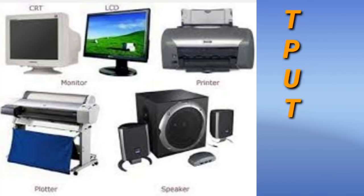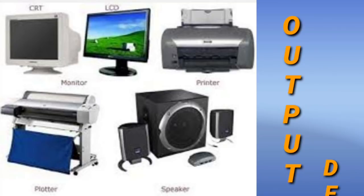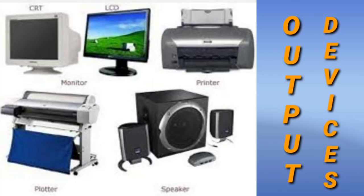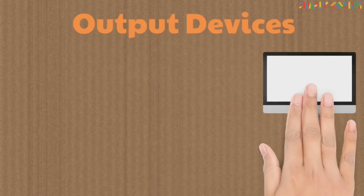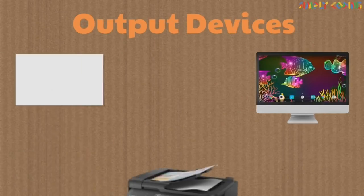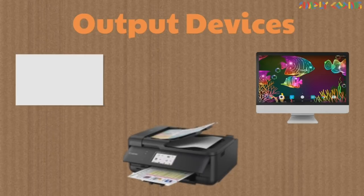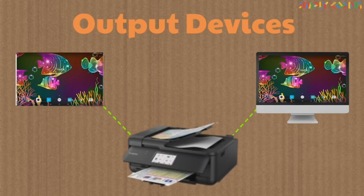Here we can see some examples of output devices: two types of monitors, printer, plotter, and speakers. In a computer, an output device is typically a hardware equipment which converts computer output into human-readable form.